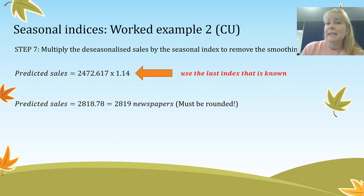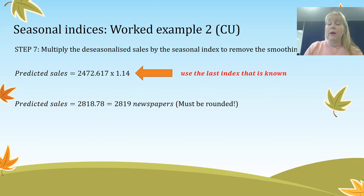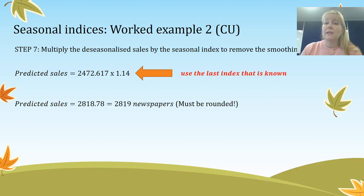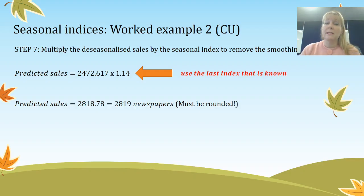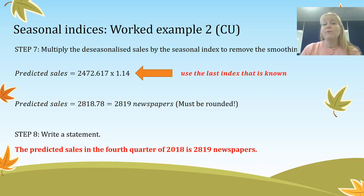We use the last quarter's seasonal index because sales from year to year probably aren't that different. If we were asked to predict the third quarter, we would use the third quarter's seasonal index. My very last step is to write a statement: the predicted sales in the fourth quarter of 2018 is 2,819 newspapers.